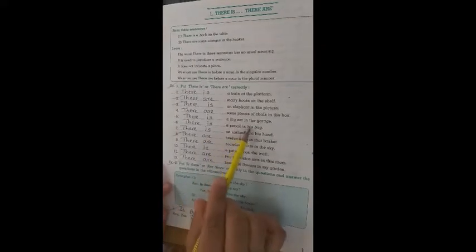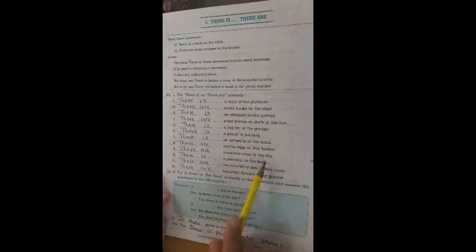There is a pencil in his bag. There is an umbrella in his hand. There are twelve eggs in that basket. There are countless stars in the sky. There is a painting on the wall. There are two television sets in this room. There are beautiful flowers in my garden. Now Exercise 2.